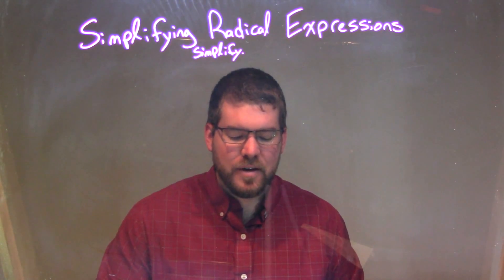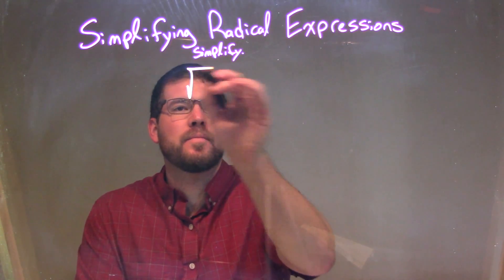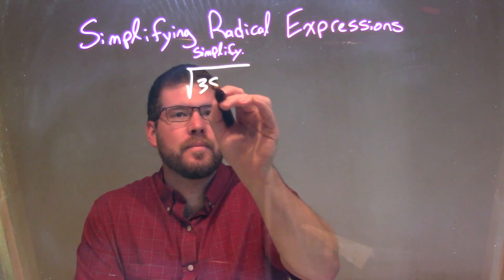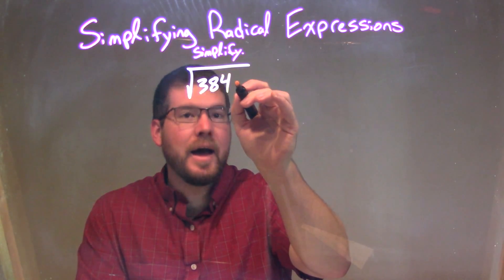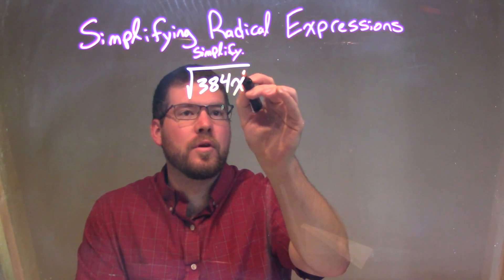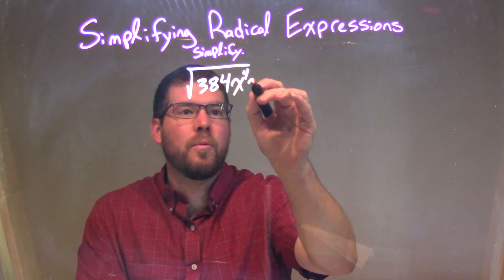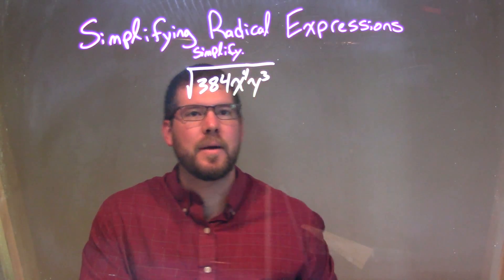So if I was given this problem: the square root of 384 times x to the 4th times y to the 3rd.